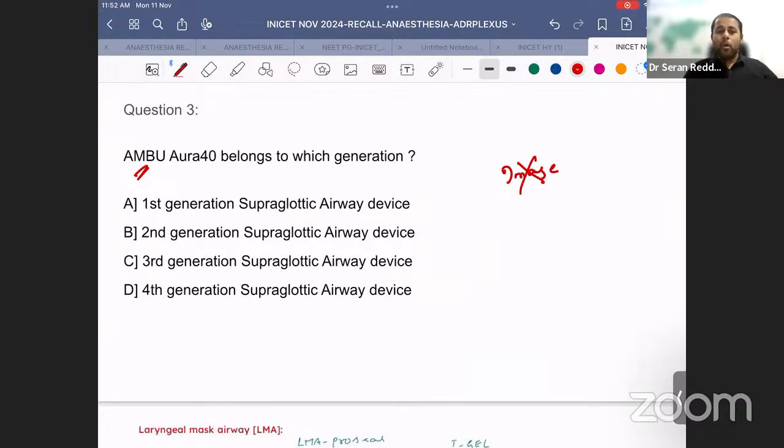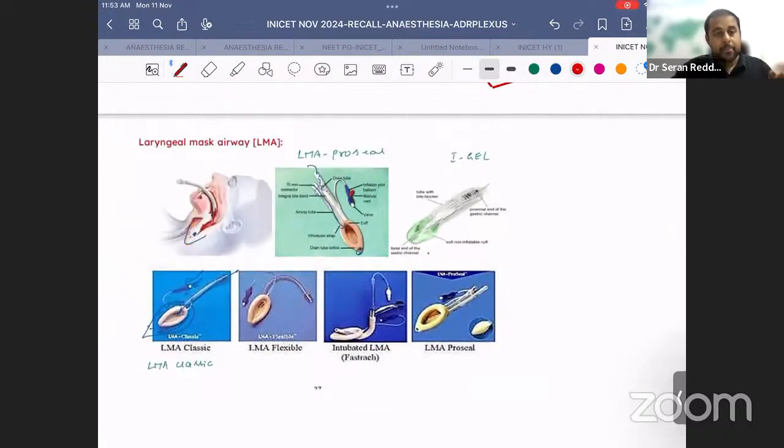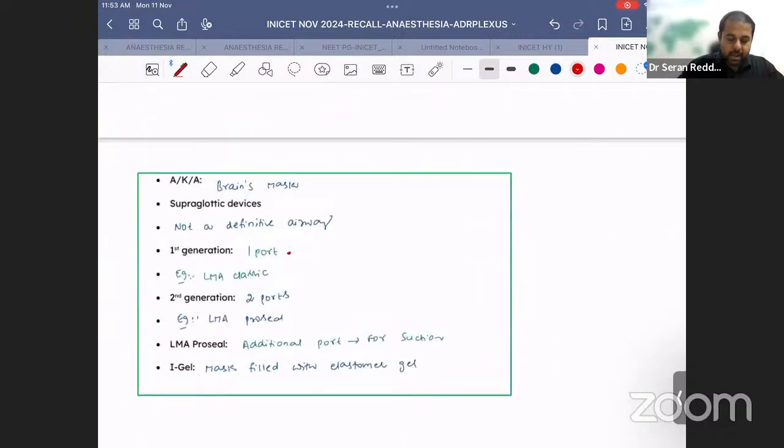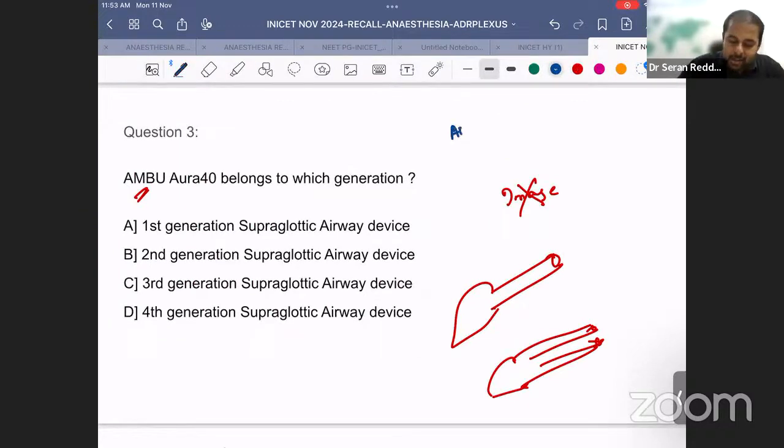There are many types of LMAs and Ambu is a company which manufactures them - Ambu has Aura Gain, Aura 40, Aura 1. What we know is: if there is only one port, it belongs to first generation. If it has two ports, they belong to second generation. First generation airway device has a single port, second generation has two ports with gastric tube. First generation one port - example LMA Classic. Second generation two ports - LMA ProSeal. The additional port is for suction.